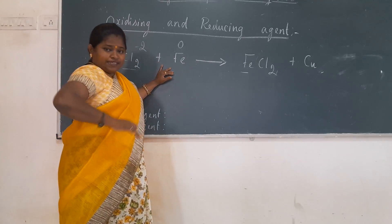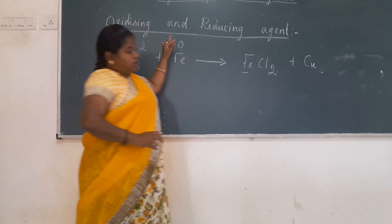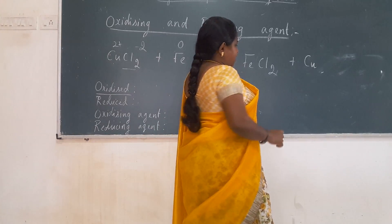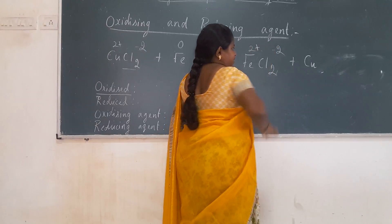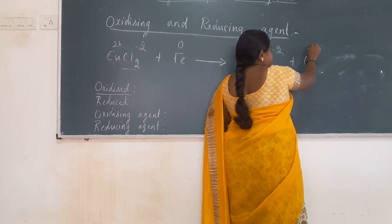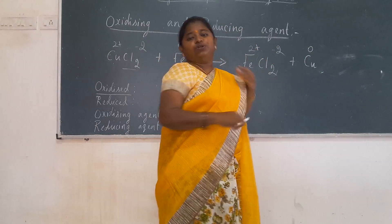And over here, if it is a single element, it is 0. And FeCl2, same way Cl2 is minus 2, I mean 2 minus and this is 2 plus. And copper, it is a single element according to the oxidation rule, it is 0.